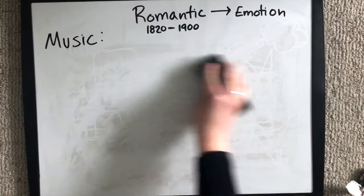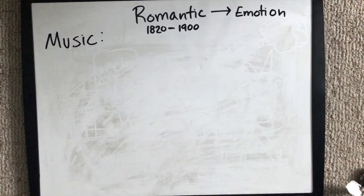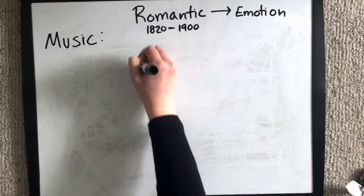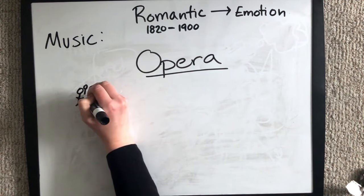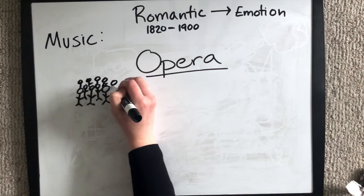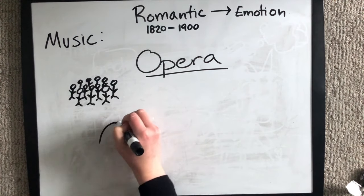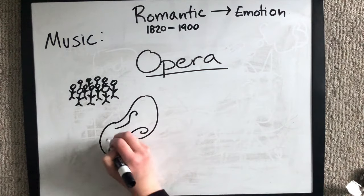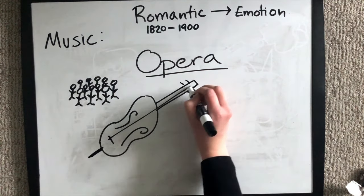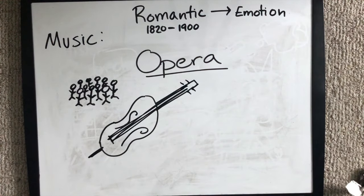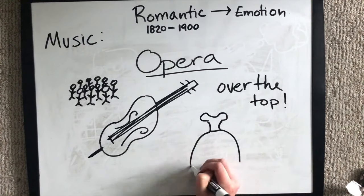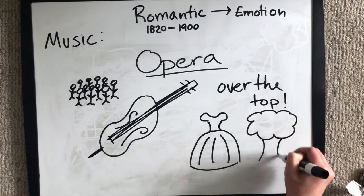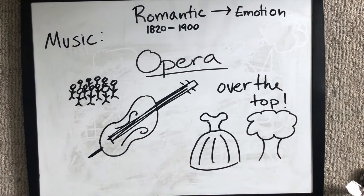Since the romantic era emphasized emotion and story, it's no surprise that opera blossomed during this time. The casts were much larger than in the classical era, and the orchestra played a huge role in the telling of the story. Operas were much more over the top with costumes, scenery, sets, and dramatic flair throughout the entire production, all used to emphasize the story itself.